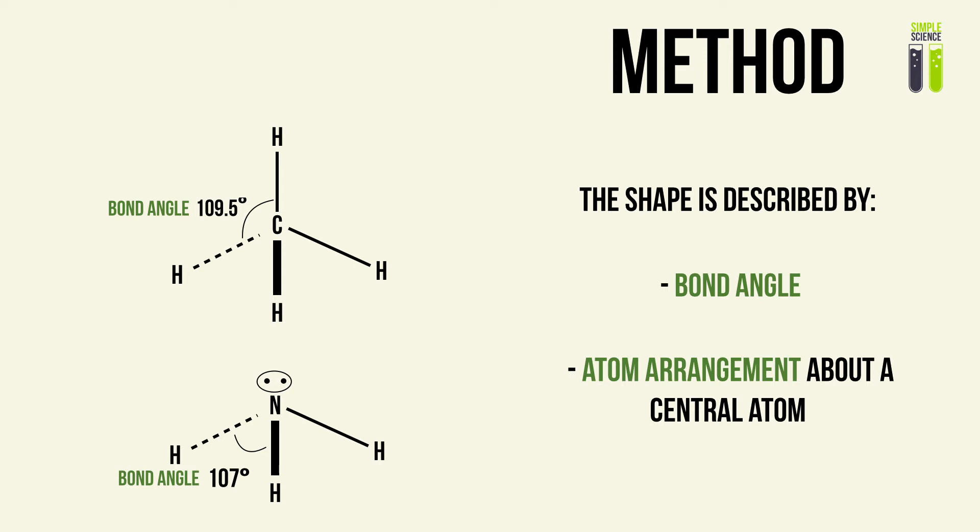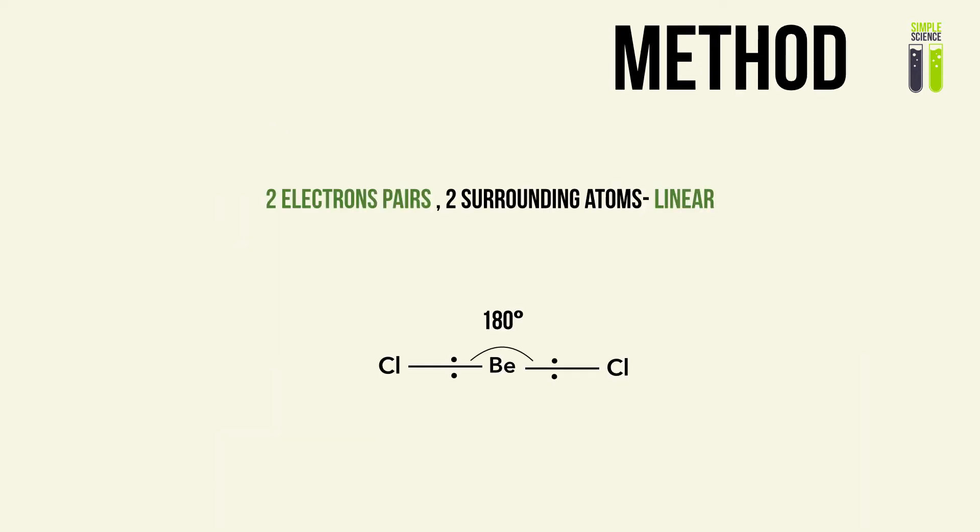The first case is when there are two electron pairs and two surrounding atoms. These two electron pairs about a central atom will try to repel each other as far away as possible, so we end up with the largest possible angle — that is 180 degrees. Therefore, we end up with a linear shaped molecule where we have three atoms along a straight line. This shape is known as the linear shape.